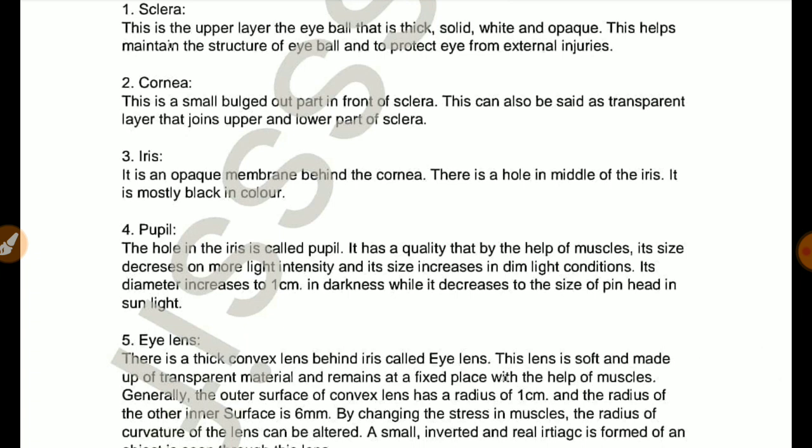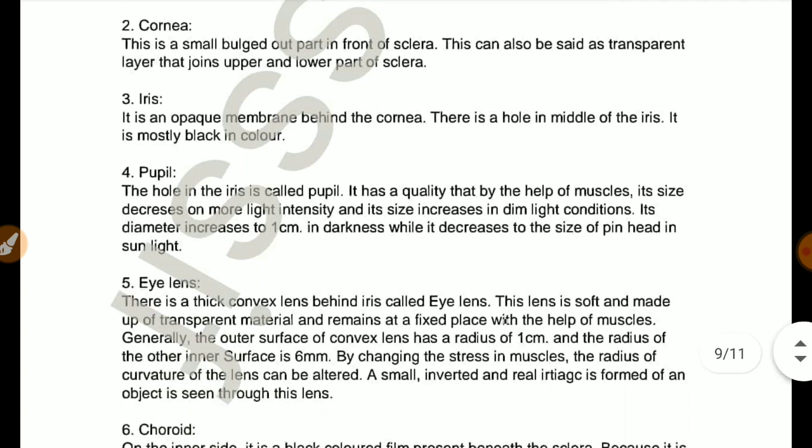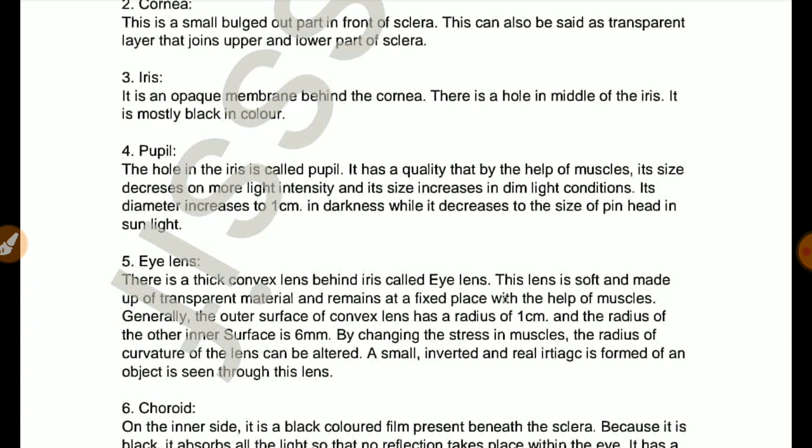Iris: It is an opaque membrane behind the cornea. There is a hole in middle of the iris. It is mostly black in color. Pupil: The hole in the iris is called pupil. It has quality that by the help of muscles, its size decreases on more light intensity and its size increases in dim light conditions. Eye lens: There is a thick convex lens behind the iris called eye lens.